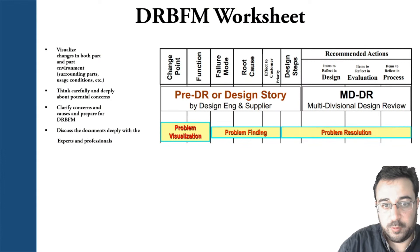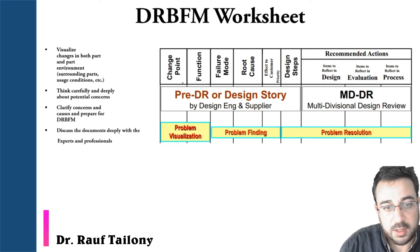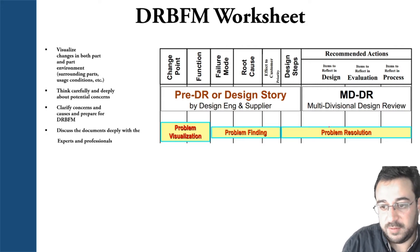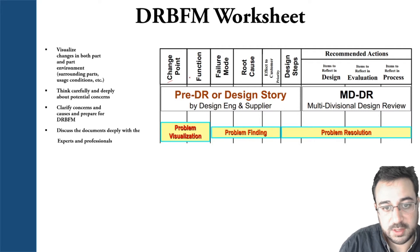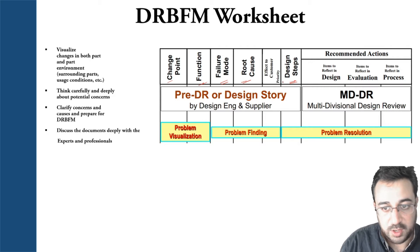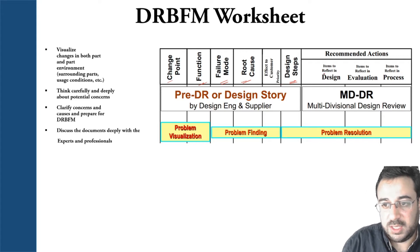The DRBFM worksheet is mainly consisting of a part dedicated to problem visualization, then a part dedicated for problem finding, and eventually the problem resolution or problem solving part. You will have a part dedicated for change points, a part for functions, another part for failure modes, root cause and effect to the customers, and the level of priority for that effect. Then you have the design steps taken either to create the part, to do the change, or to avoid any kind of predicted problems.